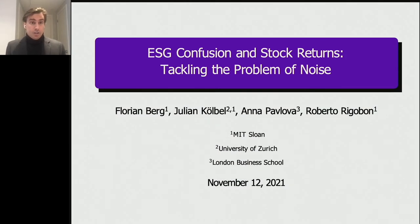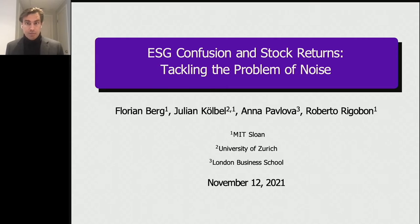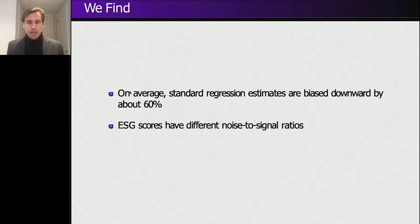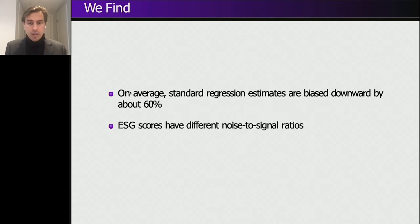ESG ratings are noisy, and this noisiness will actually bias downward the link between financial performance and ESG performance. We show that in a standard regression setting — the most commonly used in academic research — those coefficients are biased downward by more than 60% due to this noise. We propose a noise correction method and show how noisy these ESG scores are.